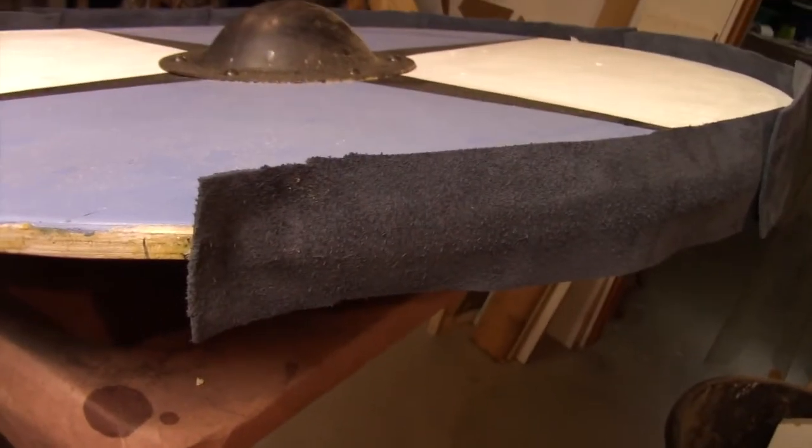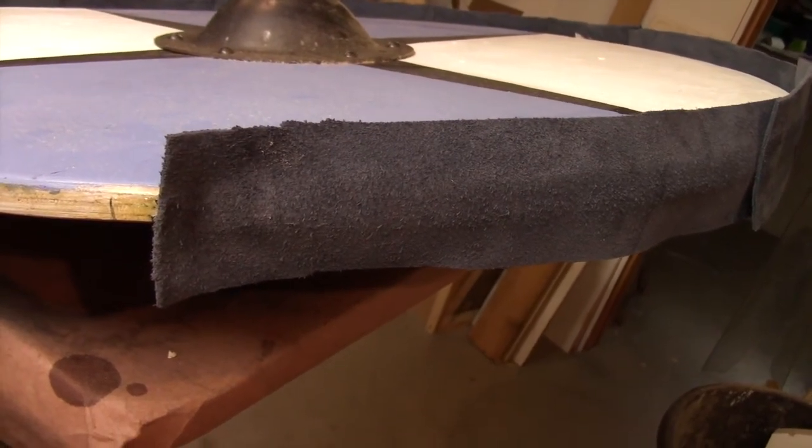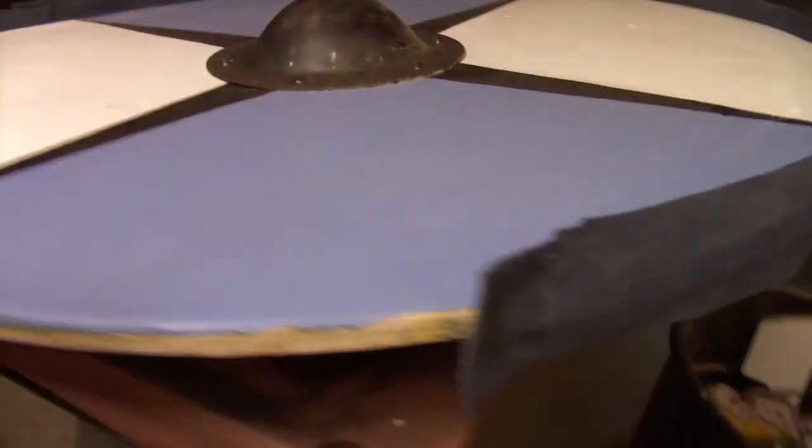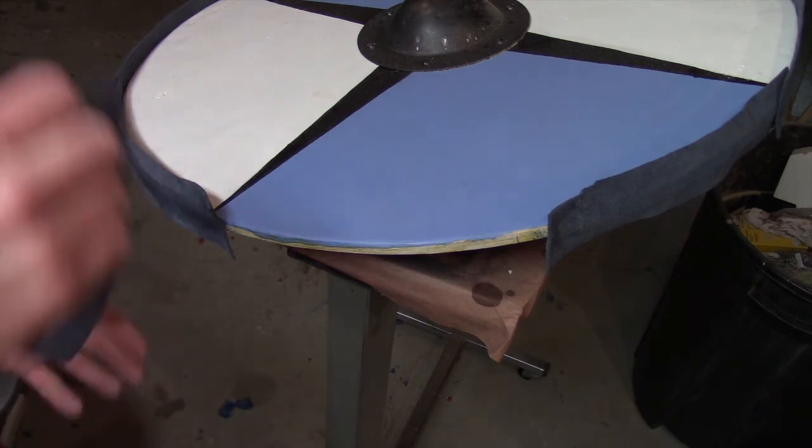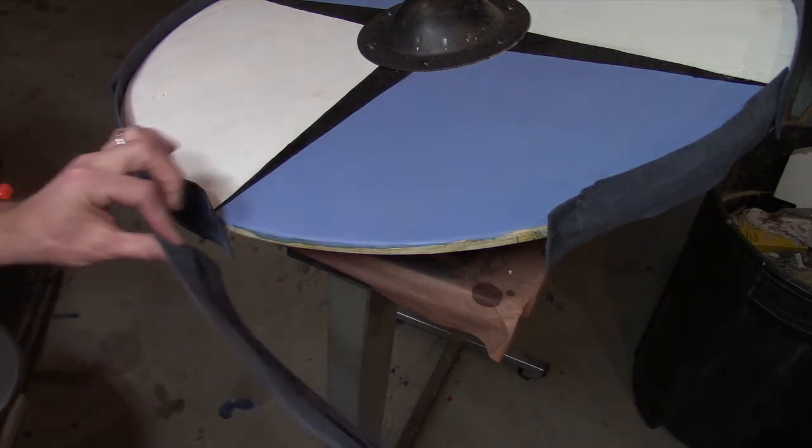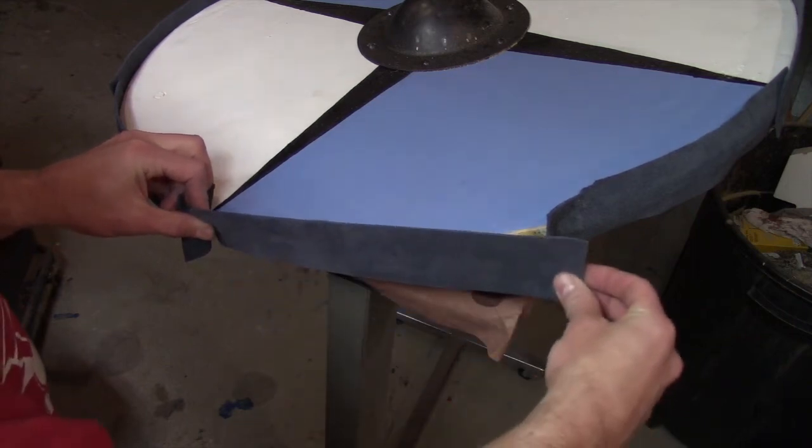It took me forever to decide what I was going to do with the edge of the shield until I finally stumbled across a whole lot of this bluish leather. It's going to work out perfectly. Put some contact cement on the edge of the shield, some contact cement down the center of each section of the leather, and then just put it in place.